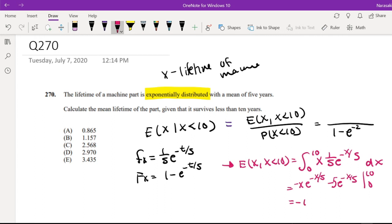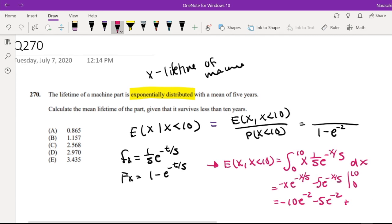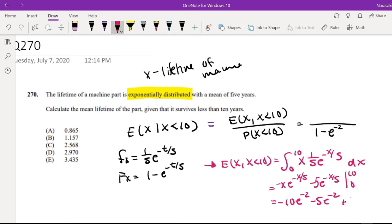Evaluating at 10: negative 10 e to the negative 2, minus 5 e to the negative 2. Evaluating at 0: minus minus makes a positive, so we add 5. This gives us 5 minus 15 e to the negative 2.